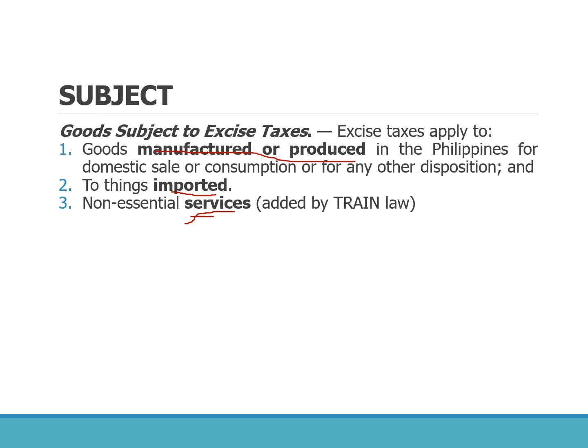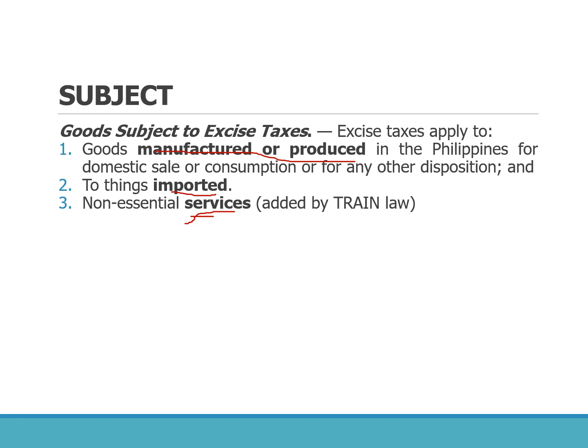Before the TRAIN law, there were only two transactions subject to excise tax: goods manufactured or produced in the Philippines, and goods imported. The TRAIN law added excise taxes on services for the first time. Non-essential services covered are purely cosmetic and invasive procedures simultaneously. If the procedure is curative — for example, surgery to fix an accident injury — no excise tax applies. If it is non-invasive, like a facial, no excise tax applies either. The two kinds of excise taxes are: specific excise tax, imposed based on a measurement other than value such as weight, volume, or physical unit — for example, cigarettes taxed per pack — and ad valorem excise tax, based on the value itself, such as 20% of the net selling price applicable to hard liquor.